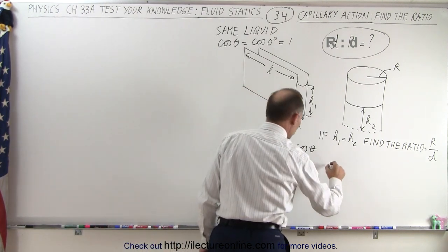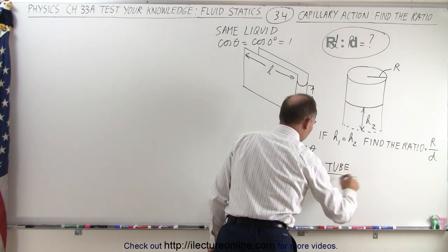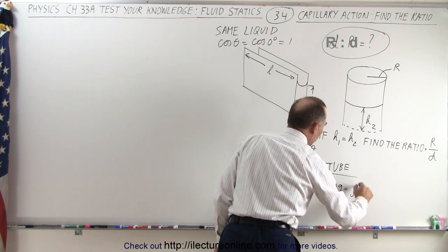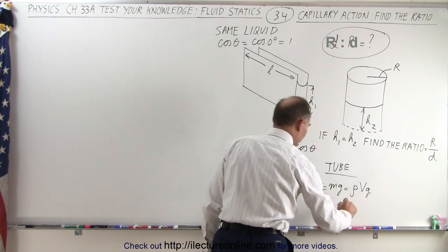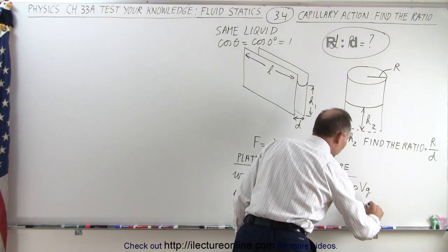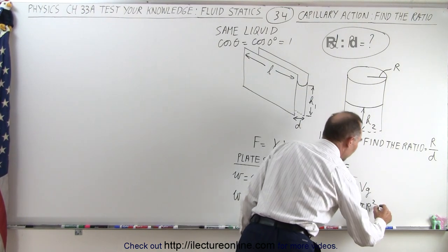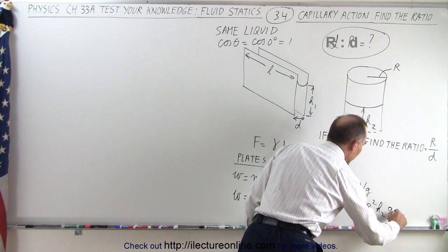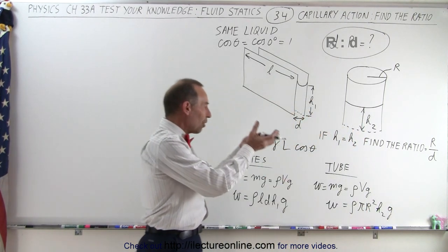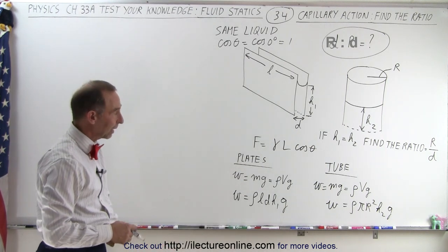For the tube, the weight is also equal to Mg, which equals rho times V times g — specifically rho times pi R squared times H2 times g. That is the weight of the liquid drawn up inside the tube.